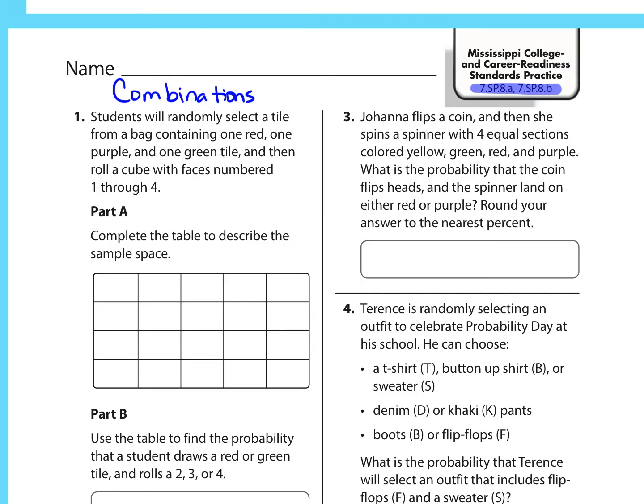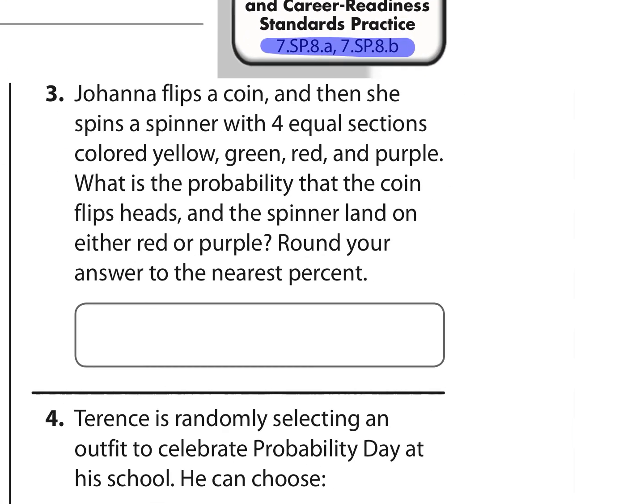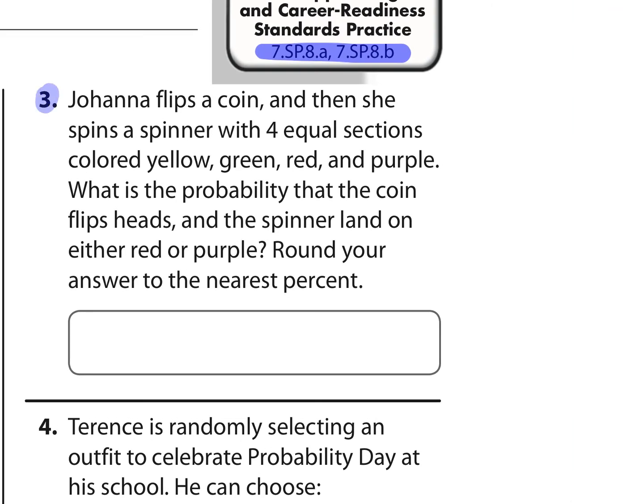Standard 7, SP, 8 is broke down into three little mini standards, A, B, and C, and we're going to just focus on A and B. And these are dealing with combinations. So let's look at problem 3. It says, Joanna flips a coin, and then she spins a spinner with four equal sections. What's the probability that the coin flips heads and the spinner lands on either red or purple?